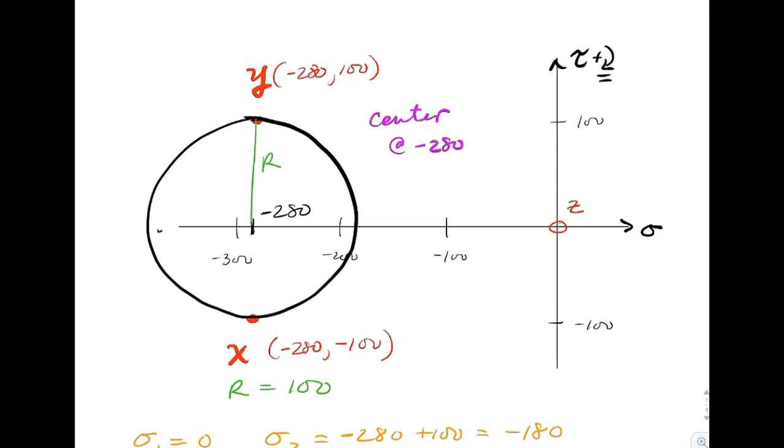On Mohr's circle, plotting those points, x-point, the y-point, the radius still remains the same on this circle. The only thing that's changed is that circle moving to the left. Now the center sits at minus 280.